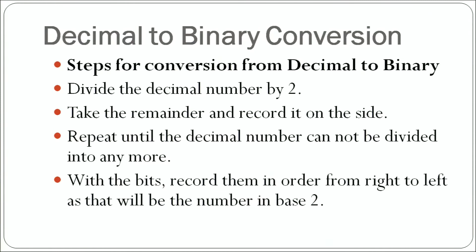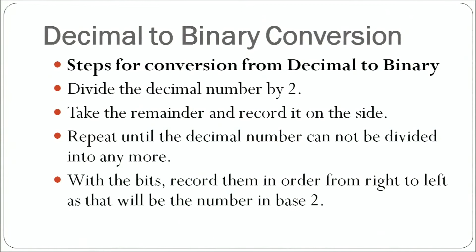When we convert a decimal number to binary, we divide the decimal number by 2, because the binary number system is base 2. We take the remainder — not the multiplier — and record it on the side. We repeat until the decimal number cannot be divided anymore. Then we record the remainders in order from right to left, and that will be the number in base 2.